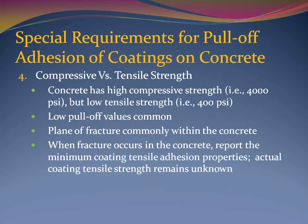The fourth special requirement is compressive versus tensile strength. Concrete has extremely high compressive strength, typically in excess of 4,000 psi, but relatively low tensile strength, typically less than 400 psi. Therefore, it is quite common to get a relatively low value when you test coatings on concrete, and the plane of fracture is typically within the concrete substrate since the coating tensile strength often exceeds the concrete tensile strength. In this case, the minimum coating adhesion pull-off strength can be reported, but the actual coating strength is unknown.